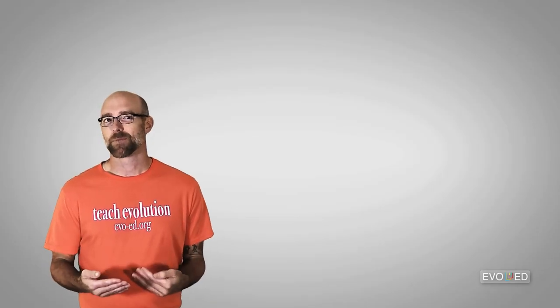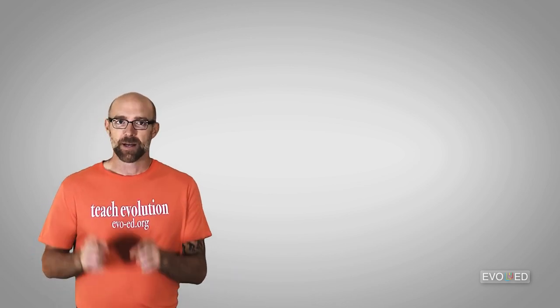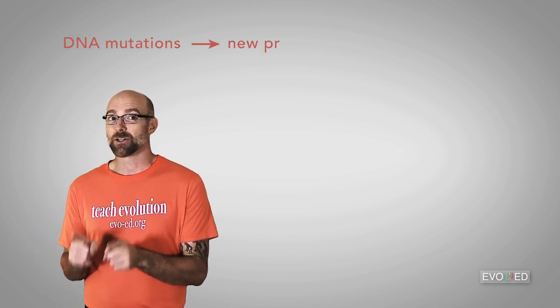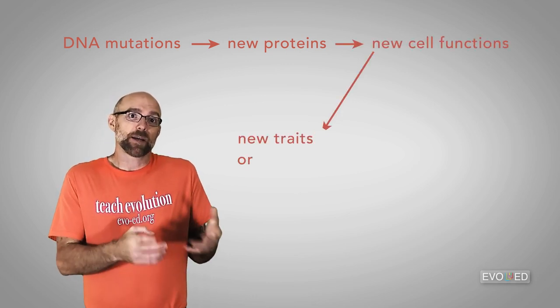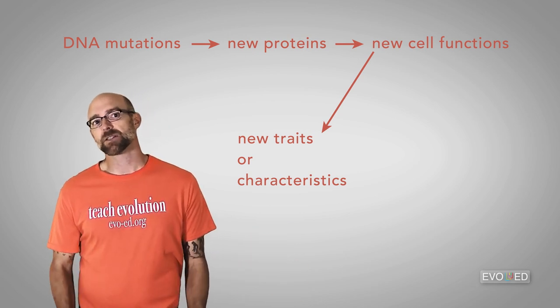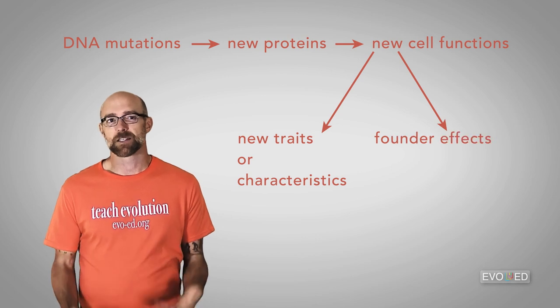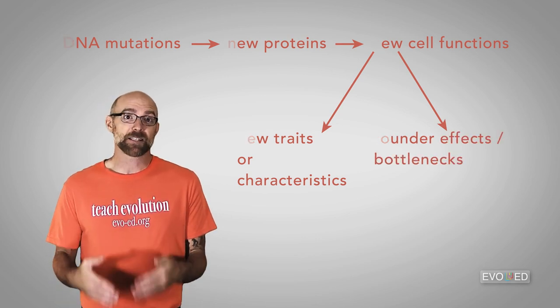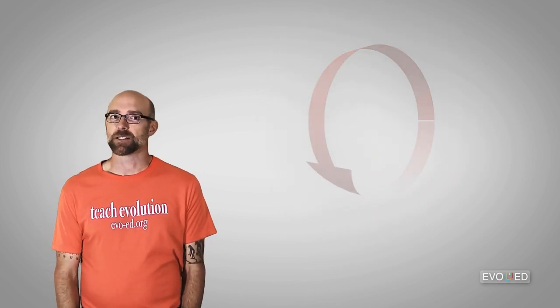By way of a recap, the process of evolution can be broadly summarized as follows. DNA mutations that lead to new proteins, that lead to new cell functions, that lead to new traits or characteristics emerging that are selectively advantageous in populations or become more widespread due to things like founder effects and bottlenecks. As this process occurs over and over and over, it results in speciation.